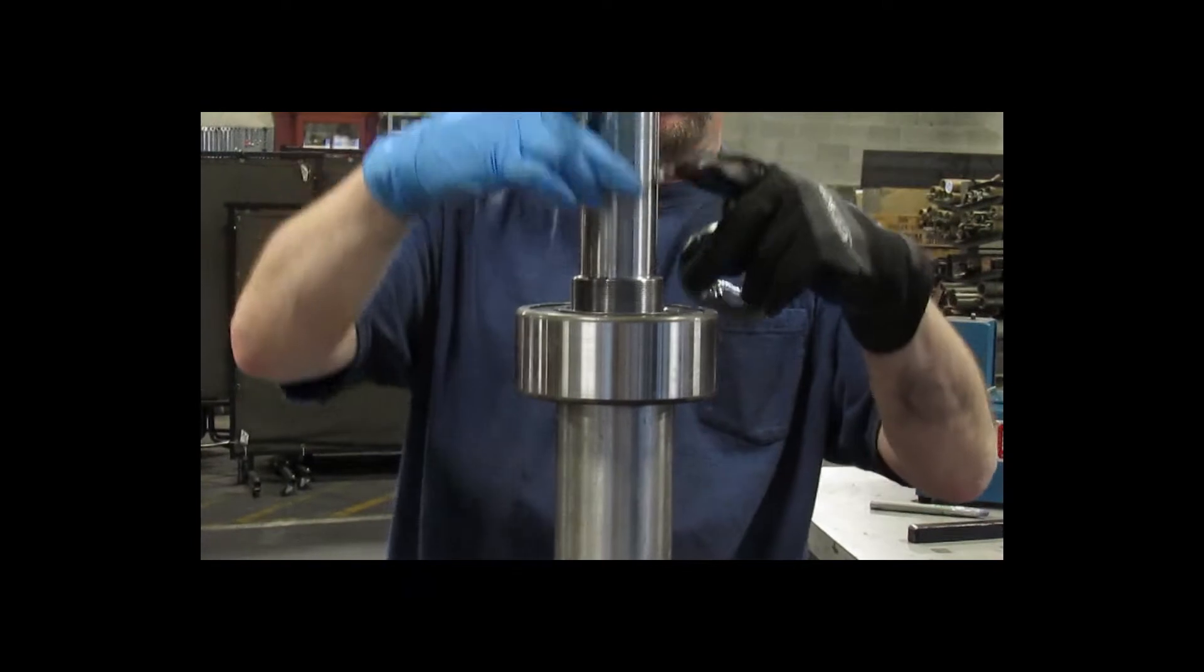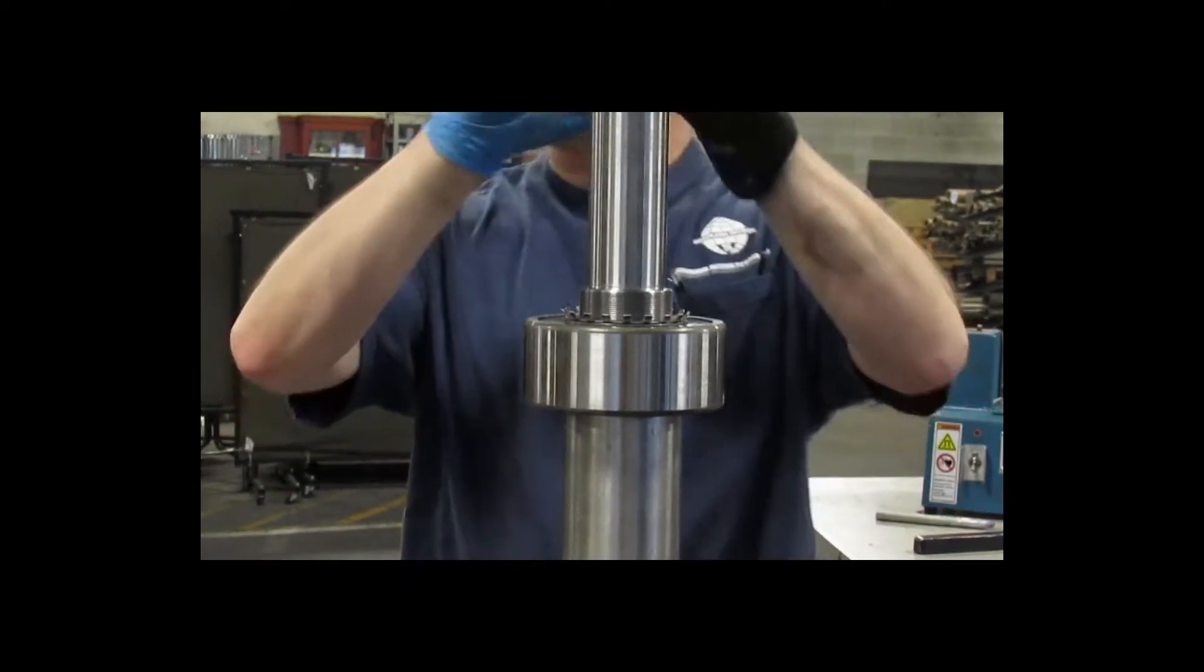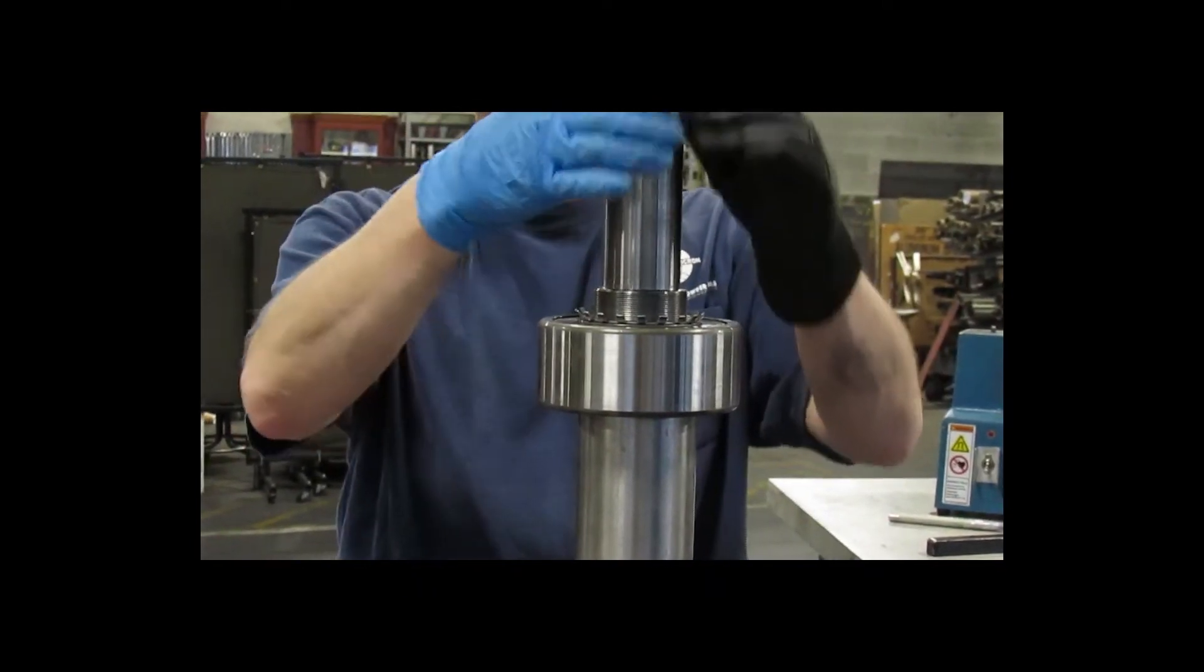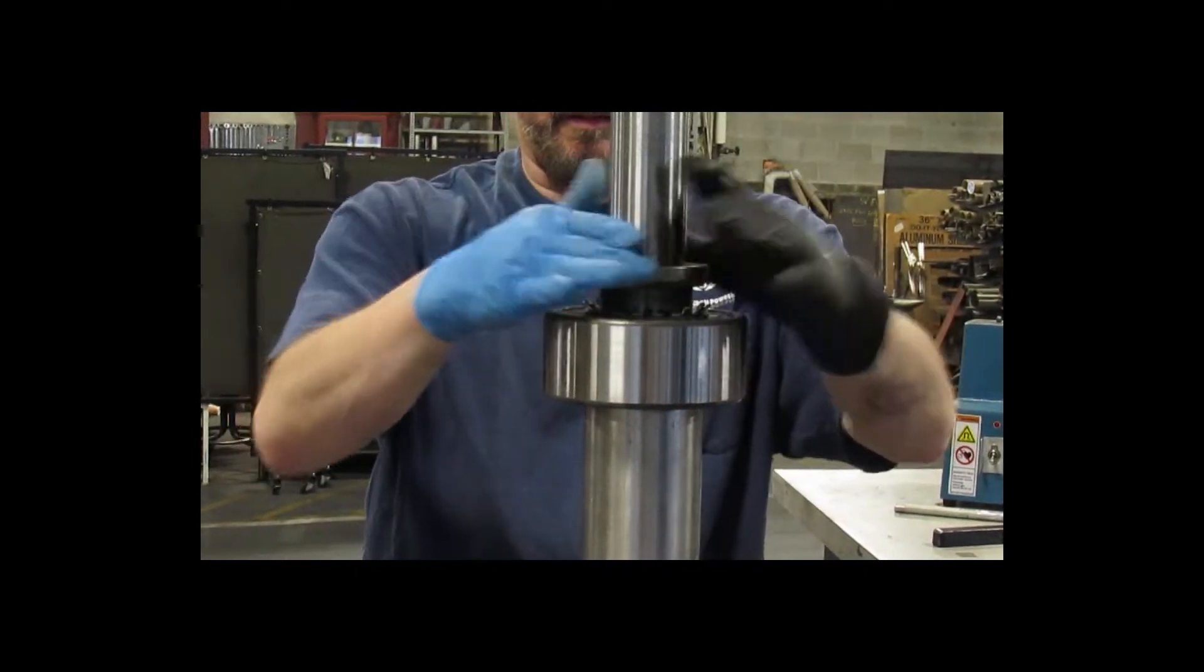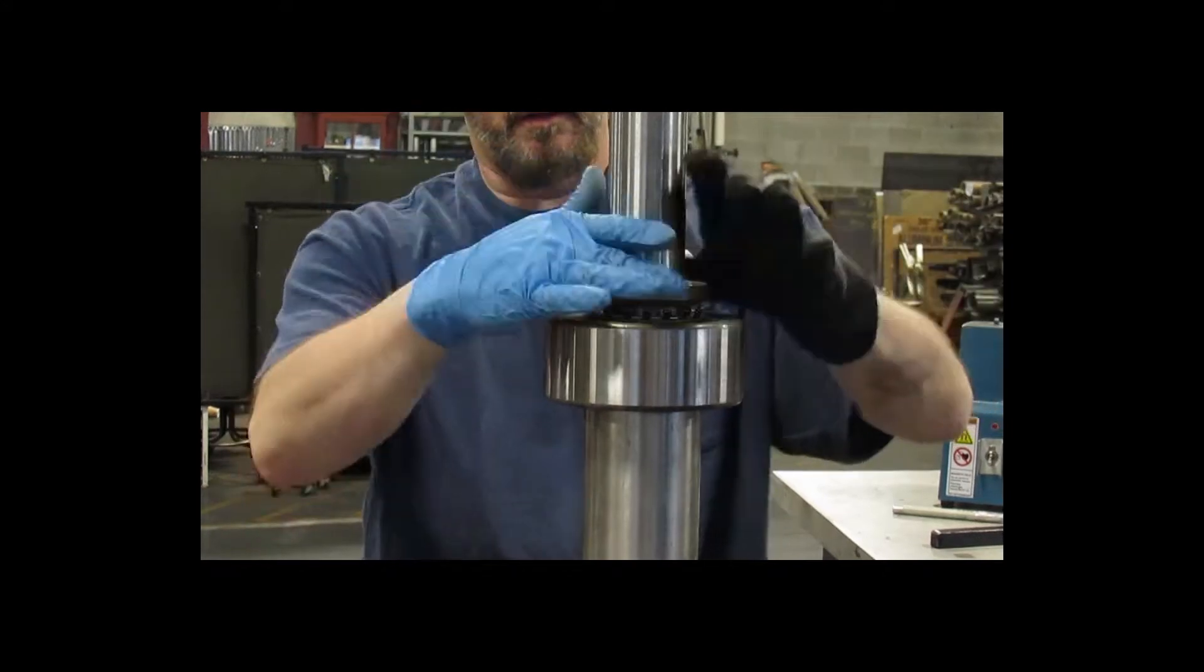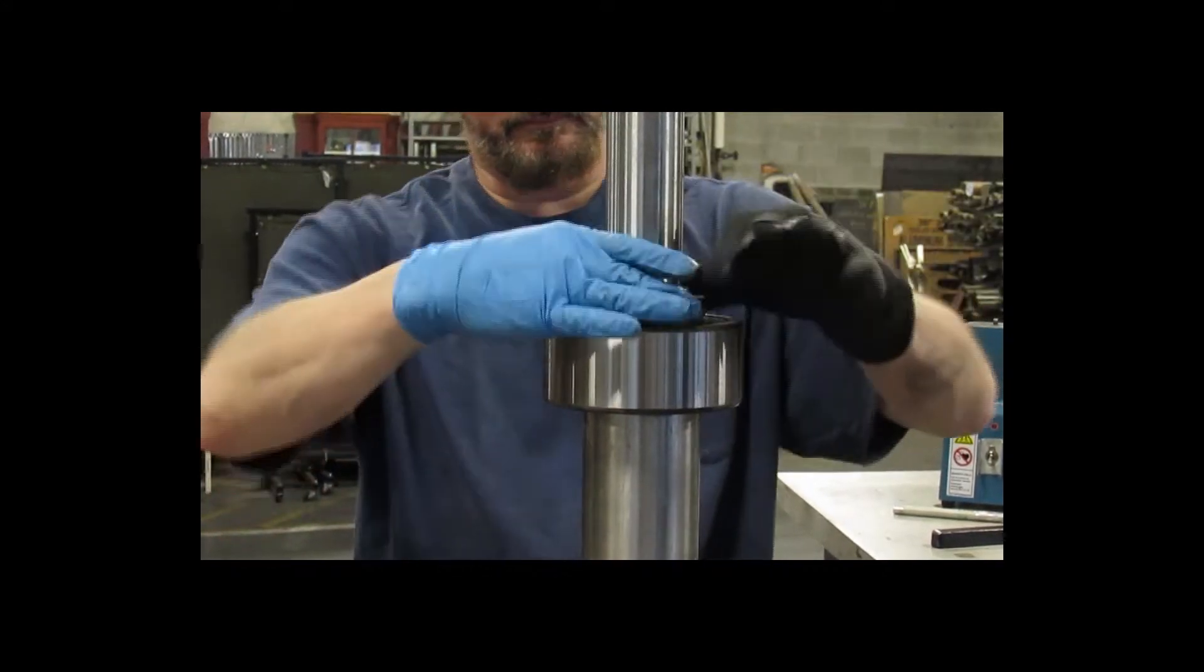Once the bearing is installed, the lock washer is then installed, followed by the lock nut. The lock nut is tightened down against the lock washer to securely fasten the bearing against the inner sleeve.